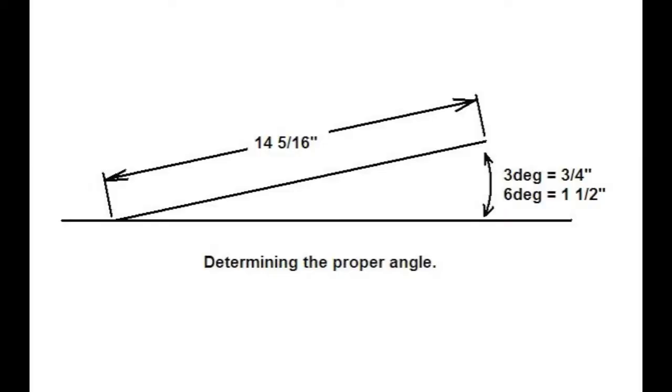Well to make the math easy, what I did is I got out a trig calculator and tried a 3/4 inch rise and a 1 and a half inch rise in the calculator and came up with basically a 14 and 5/16 inch distance. We're going to use these figures to calibrate our torpedo level so that we know exactly where 3 and 6 degrees is.